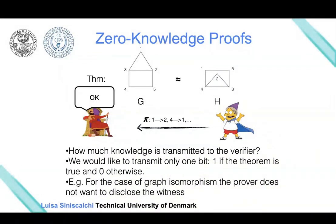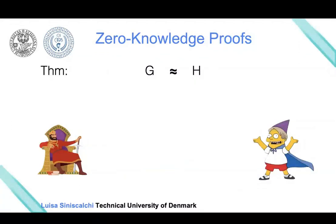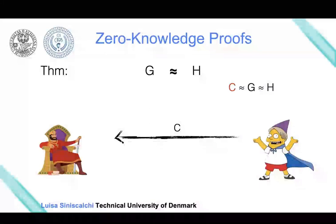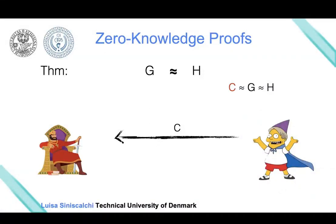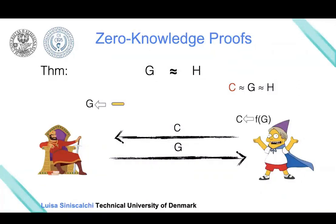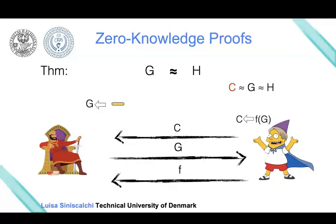Let's see how we can do that. We have our theorem that the two graphs are isomorphic. What the prover can do is sample another graph C that is isomorphic to both G and H, and send this to the verifier. The verifier will toss a coin and choose one of the two graphs—G or H with probability one-half—and send this choice to the prover. The prover will then apply a permutation between the chosen graph and C, and send this permutation back to the verifier, which checks if the permutation confirms that the two are isomorphic.